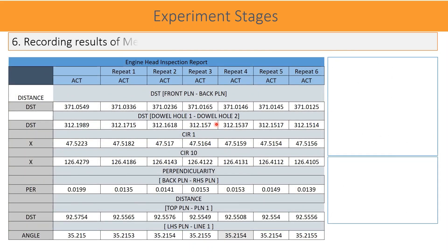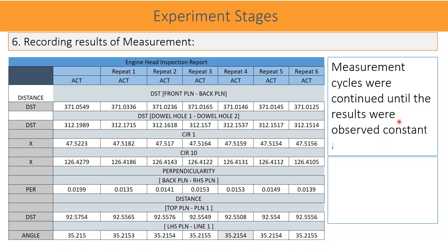Recording the results of measurement. Measurement cycles were continued until the results were observed constant and stabilized. The tabular report shows the number of times the cycle ran and the measurement results observed. For example, the distance 371.049, first time measured is 371.0336. In the second run it dropped down to 371.0236, and further it was measured in repeat column 3, column 4, column 5, and column 6 until the results are satisfied for the repeat and the stabilization.